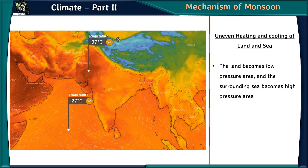The first mechanism of monsoon is the uneven heating and cooling of land and sea. During summer, the interior part of Asia and northwestern India get intensely heated, creating a low-pressure area, while the surrounding sea remains a high-pressure area due to comparatively lower temperatures. Wind blows from the high-pressure sea towards the low-pressure land, gathering moisture on the way and causing rainfall.